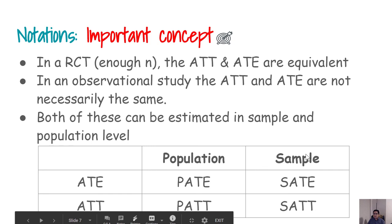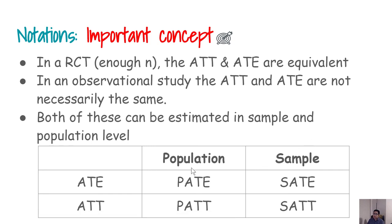There are two different types of estimates we are going to use: the first is at the population level — population ATE and population ATT — and the second is from the sample — sample ATE and sample ATT.